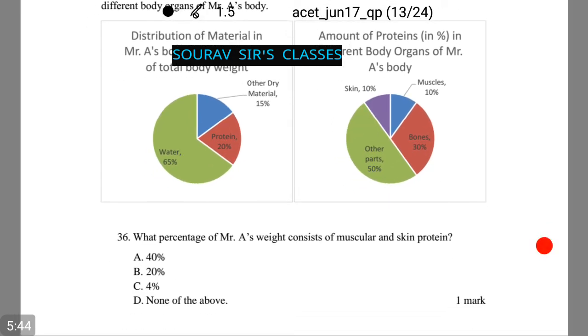The first question asks what percentage of Mr. A's weight consists of muscular and skin protein? Let's see. We see that protein is only 20%, whereas muscular is 10% and skin is 10%. Thus we will find 20% of protein of 20% of muscle and skin, and this comes as 4%, that is option number C.